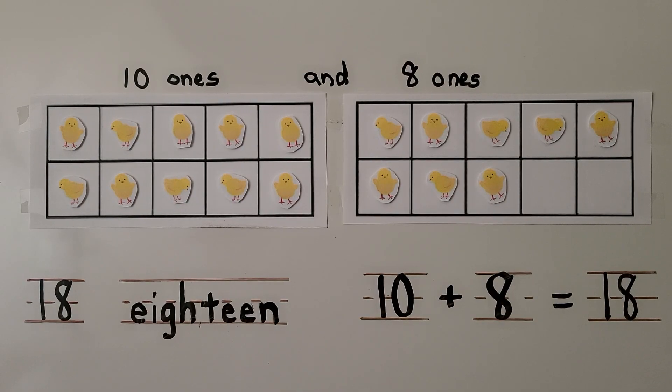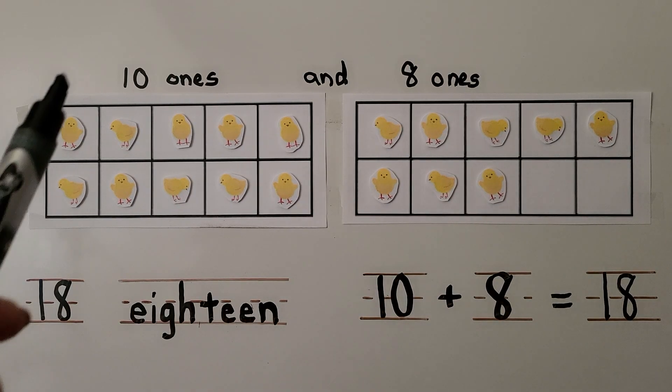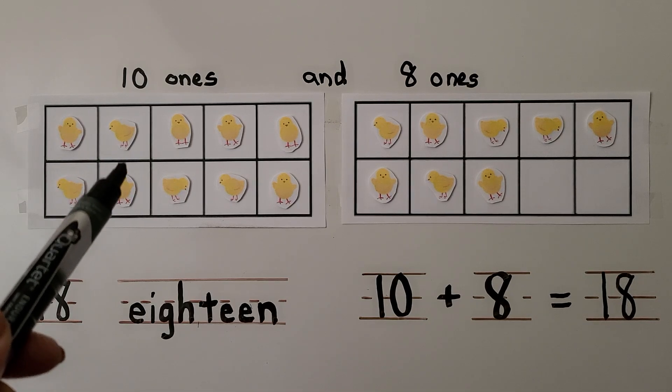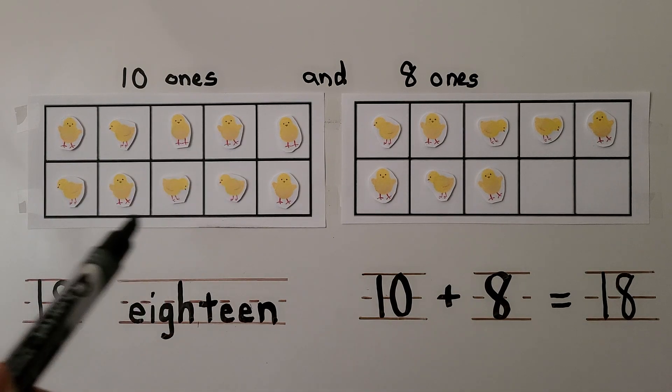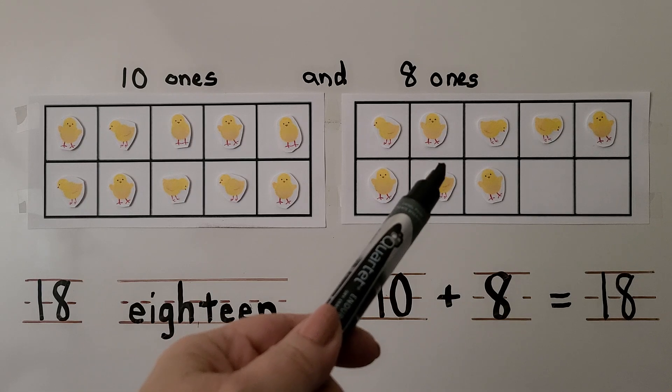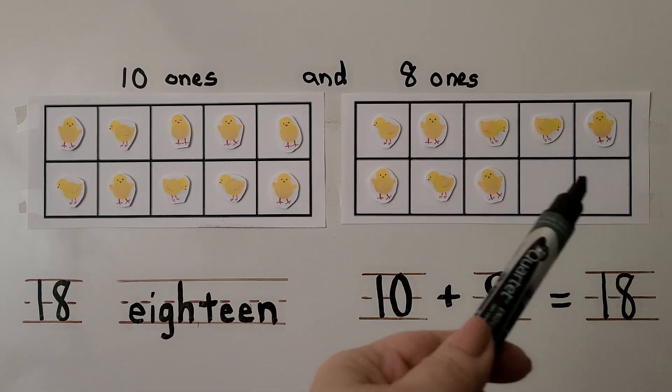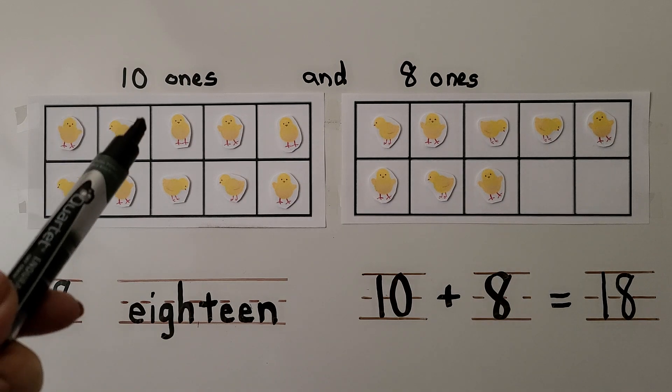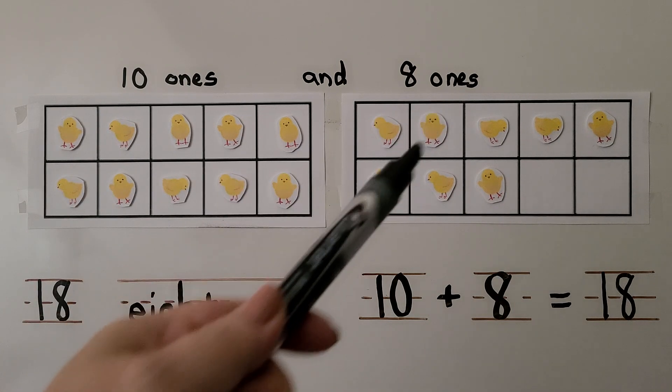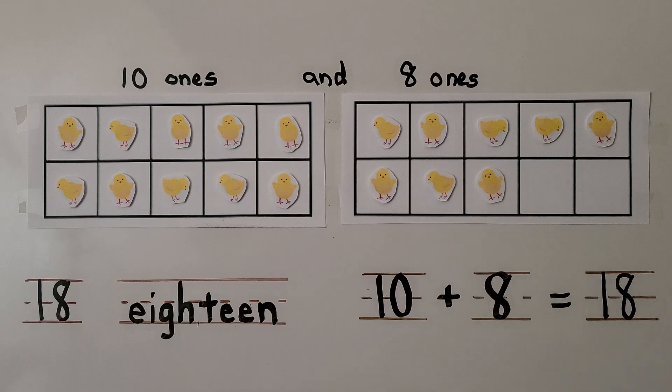Here we have some 10 frames and some chicks. There are 10 chicks in the first 10 frame. There are 8 more in the next frame. We can see there's 2 missing, so it's not a full 10. There are 10 ones and 8 ones. There are 18 chicks. 10 plus 8 is equal to 18.